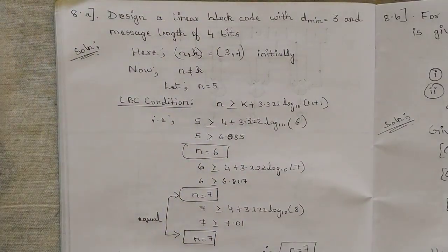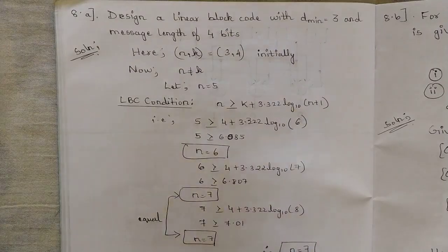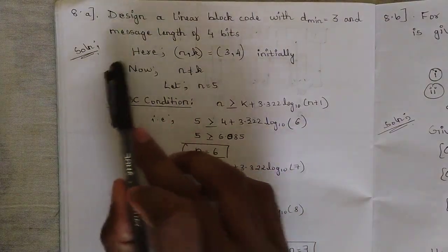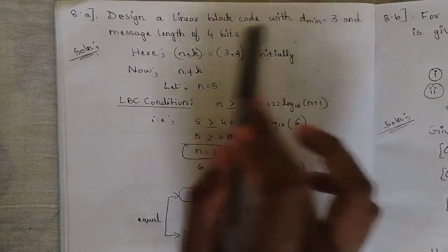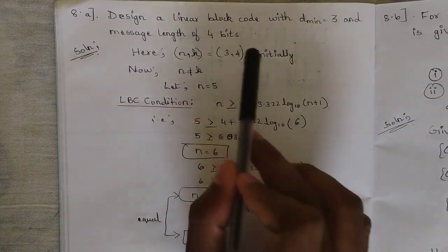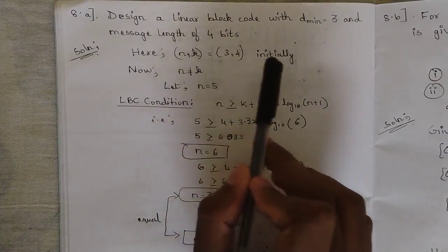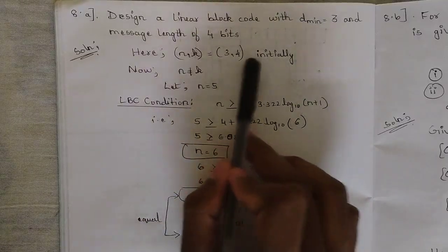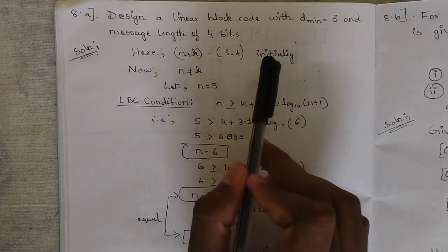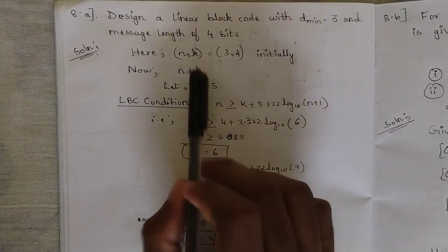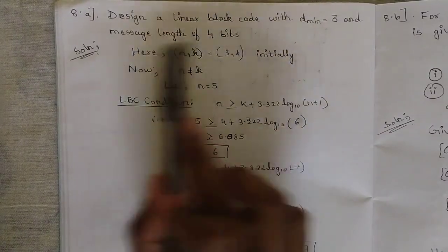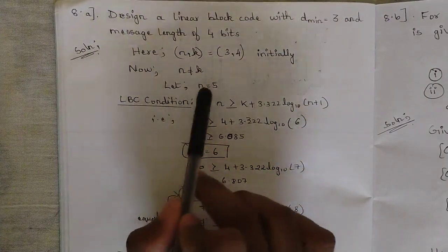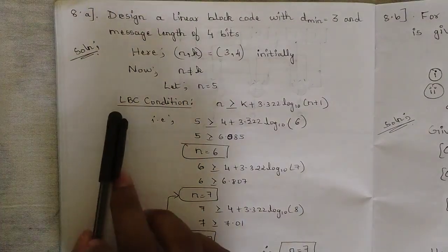We are told to design a linear block code with respect to the message length given. There is a procedure to calculate the check bits. Initially, start from the order n comma k, written as 3 comma 4. Note that n must be strictly greater than k, so this is just the initial placeholder. Since k is 4, the next value of n greater than k is 5.